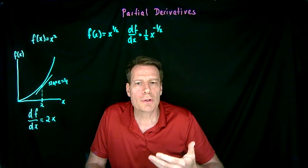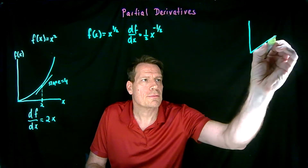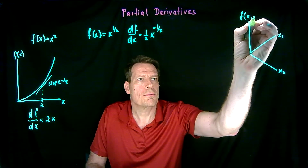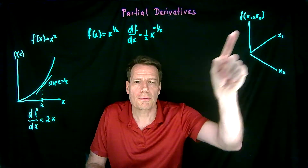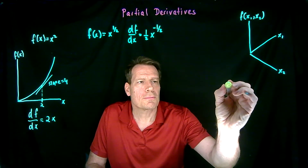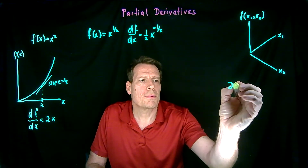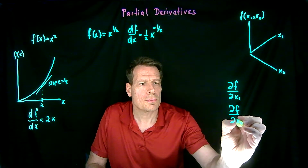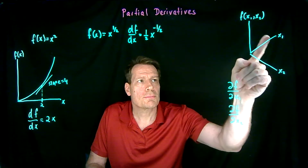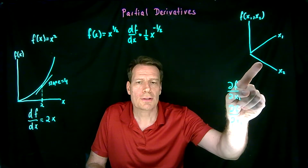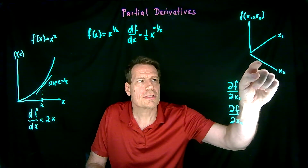But we're going to deal with functions of more than one variable — functions like the utility functions that we've graphed, where we have an x1 variable and an x2 variable, and the function is a function of both of those variables. When we have a function of multiple variables, we can still talk about derivatives. In fact, we can talk about two kinds of derivatives, which we call partial derivatives. We denote these partial derivatives with a sort of squiggly d, unlike this d. So the partial derivative of f with respect to x1, and the partial derivative of f with respect to x2, are derivatives of this multivariable function that hold one of the variables fixed.